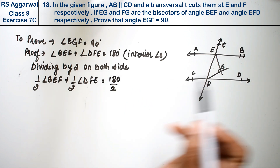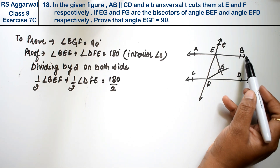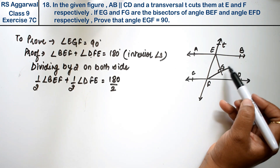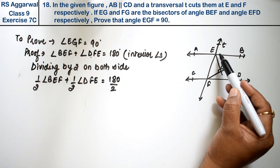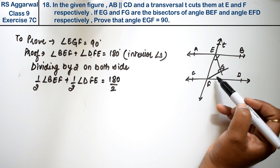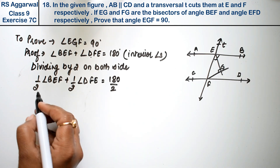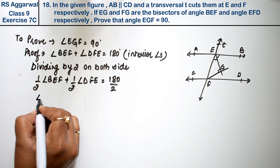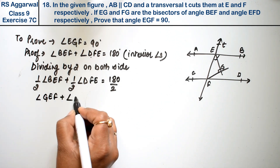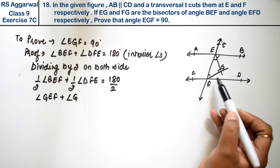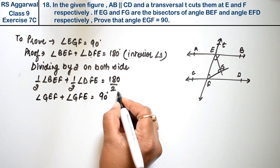Half of angle BEF is angle GEF, because EG is the bisector — so the two halves are equal. Similarly, half of angle DFE is angle GFE, because FG is the bisector. So we can write: angle GEF plus angle GFE equals 90 degrees.